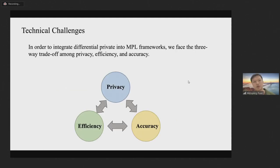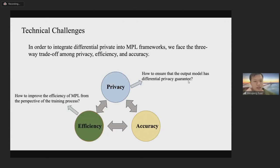In order to combine MPL with differential privacy, we face three technical challenges. The first challenge is about privacy. We should modify the training process of MPL to ensure that the output model has a differential privacy guarantee. The second challenge is about efficiency. Training an accurate model with existing MPL frameworks requires a large amount of time to complete the training process. How to improve the efficiency of MPL from the perspective of the training process is a big challenge. The third challenge is about accuracy. For deep neural network models, differential privacy noise will cause significant accuracy loss. We should reduce the accuracy loss led by the noise of differential privacy.